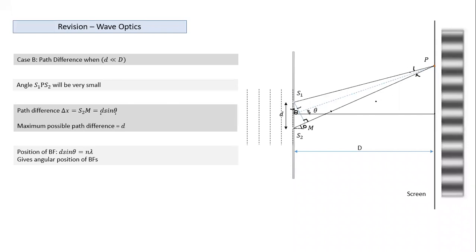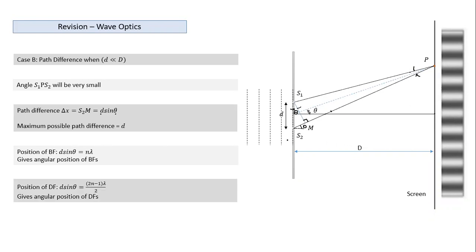Using the formula d sin θ = nλ for bright fringes, we can find the angular position of different bright fringes. For dark fringes, path difference equals (2n−1)λ/2. From the angular position, we can also find the y-coordinate. So whenever D >> d, we use d sin θ as the path difference formula to find angular positions of fringes.